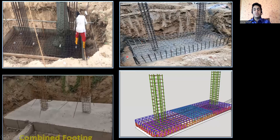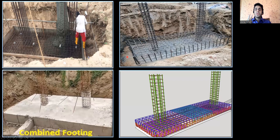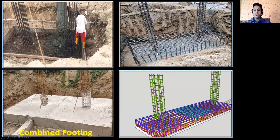And then we have combined footing. What is combined footing? If there are two or more columns on one single footing, then we call it as a combined footing. You can see here — this is my footing with bottom reinforcement and top reinforcement, and I've given one column and a second column. In the formwork, we have arranged two columns. So this is called as combined footing.